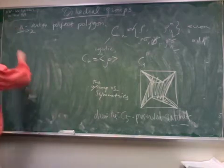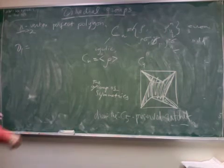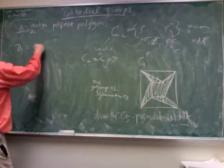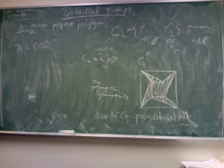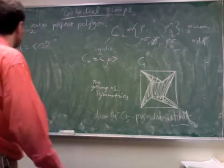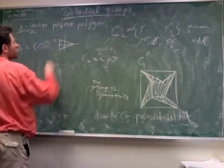So D1 is just the group of two elements which is generated by sigma. And that's the group of symmetries of an isosceles triangle, which is not equilateral. Something like this.